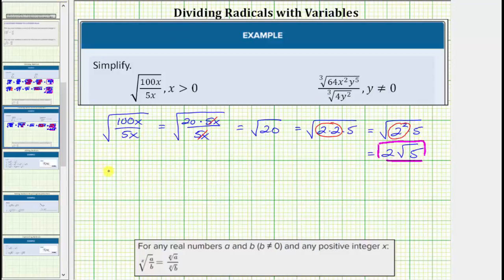Next we have the cube root of 64x squared y to the fifth divided by the cube root of 4y squared. Now this radical expression looks rather messy.